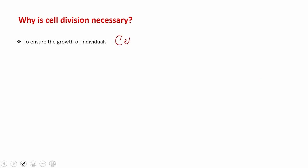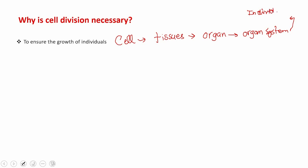We have studied that organisms are made up of cells. These cells combine to form tissues. Different types of tissues combine to form organs, and organs make up organ systems. Organ systems give rise to a complete individual. This is the cellular hierarchy we have discussed in detail in grade 6. So all the structures that make up an individual are made up of cells — cells divide and tissues form.